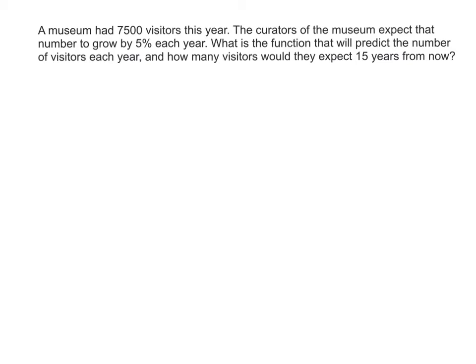So here's a problem. Museum had 7,500 visitors this year. The curators of the museum expect that number to grow by 5% each year. What is the function that will predict the number of visitors each year and how many visitors would they expect 15 years from now? This means that they're going to have an initial value. So let's just write f(x) equals 7,500 times some growth rate. Now, if it's going up 5% each year, then you're going to have 105% of what you had the year before in the subsequent year.